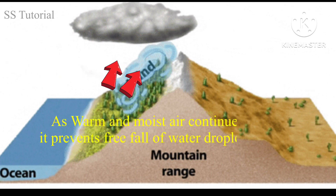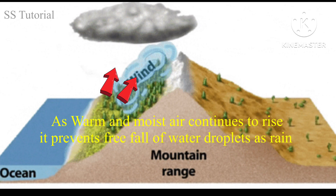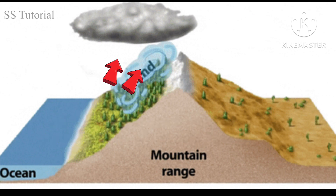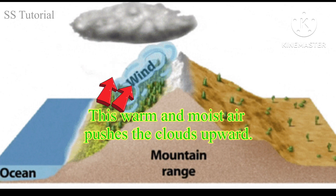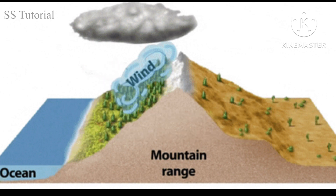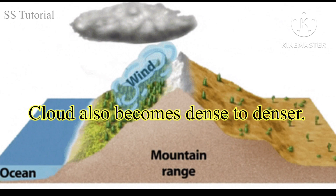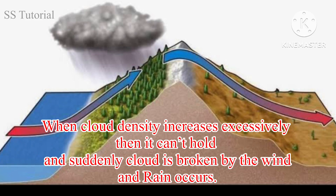As the warm air continues to rise, it prevents the freefall of water droplets as rain from the cloud, and this warm air pushes the cloud upwards. As rain does not occur, water droplets begin to accumulate within the cloud, and the water droplets become bigger and bigger.